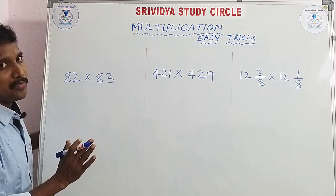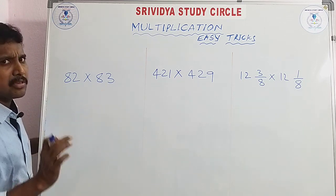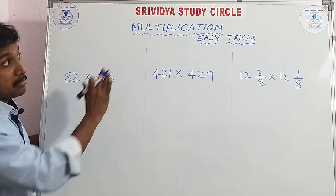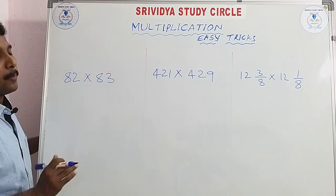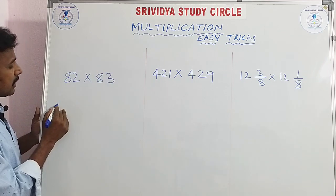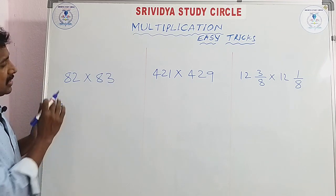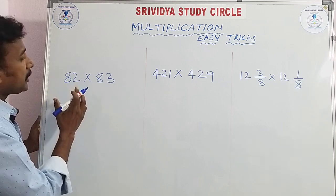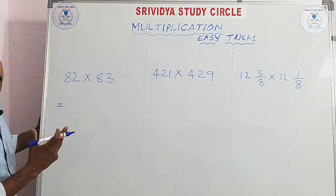For example, 82 × 83 — friends, you can find the answer in the same way in half a minute. Students, I will explain the same method step by step. When you write it the same way, here is how it works.